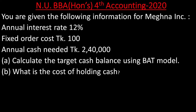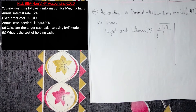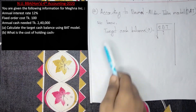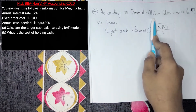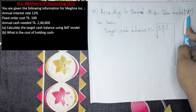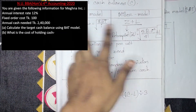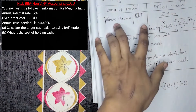What is this BAT model? According to Baumol-Allais-Tobin — the Baumol-Allais-Tobin model — so we are going to talk about the fixed order cost in this model.